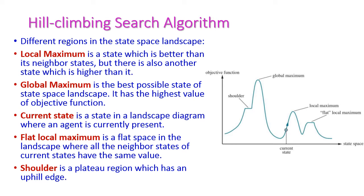In the hill climbing algorithm, let us see some of the important regions in the state space landscape. The first one is local maximum. In this diagram, this is the local maximum. A local maximum is a state which is better than its neighboring states — that is, this value is greater than all its neighbors. But there is also another state which is higher than this one. Among all these regions, some are higher than this local maximum, but when it comes to the neighbors of this node, all values are smaller. Hence this is called local maximum.